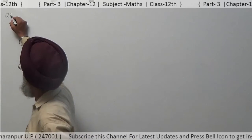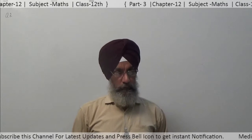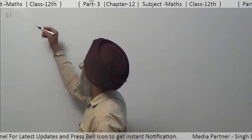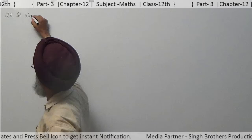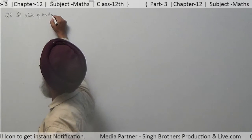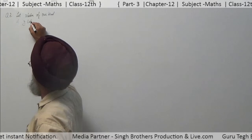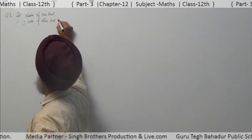We have to find the maximum number of cakes. First, let us assume: let x cakes of one kind and y cakes of the other kind be made.